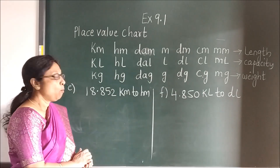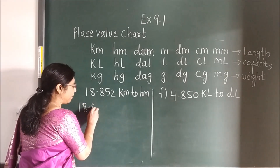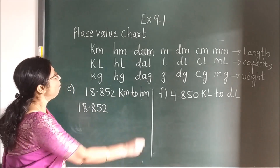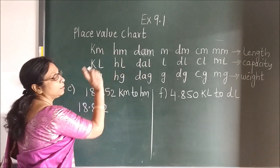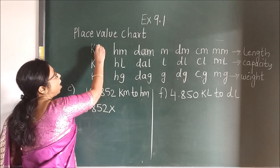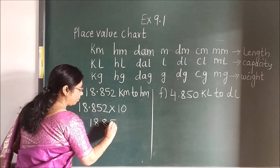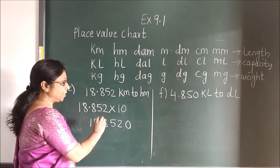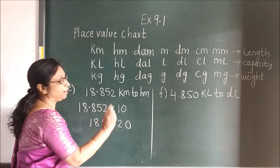Now here — same procedure, same step. Write the number with the point. KM to HM — where is KM? KM is here. And HM is here. We are moving to the right side. Multiply. Now how many times? 1. So write the number as it is, add the zero. After the point how many digits? 1, 2, 3. So 1, 2, 3 — you will get the answer.